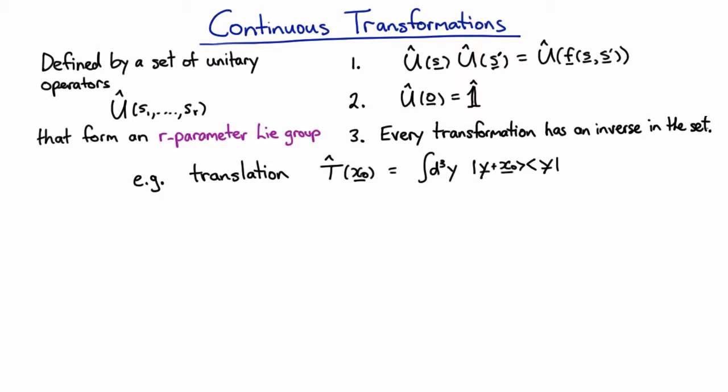We did an example, which was the translation operator. You can see that it's a unitary operator here. It can take the state y and give you the displaced state y plus x naught. Let's show that this is unitary explicitly.